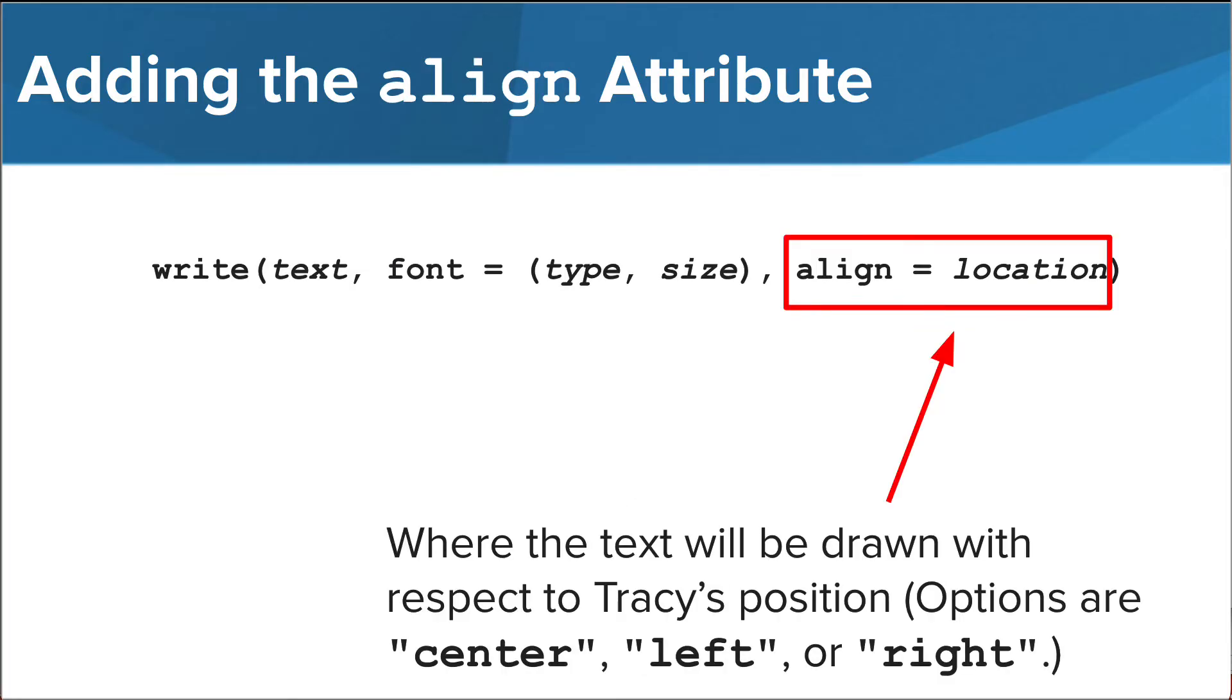The other attribute we can use with our write function is align. This will determine where the text will be drawn in relation to Tracy's position. The options we can use here are center, left, or right, all written inside quotation marks.